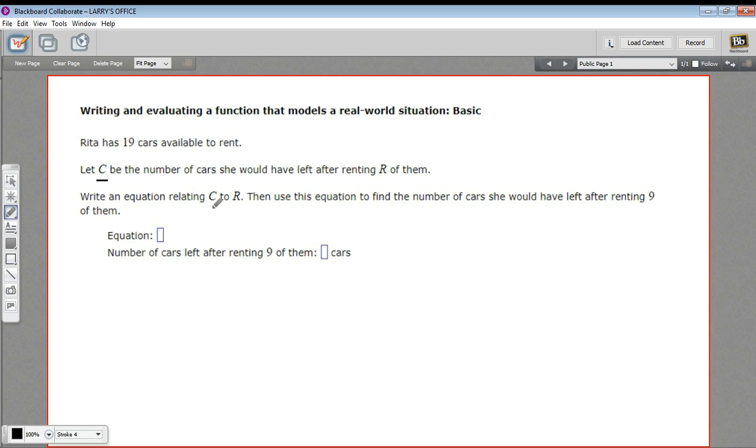So write an equation relating C to R. If C is the number of cars she has left, then C is going to equal something. She's got 19 to start with, and then she rents some number we're gonna call R of them. Whatever number that is, you're gonna subtract it from 19 to get the number of cars that are left.